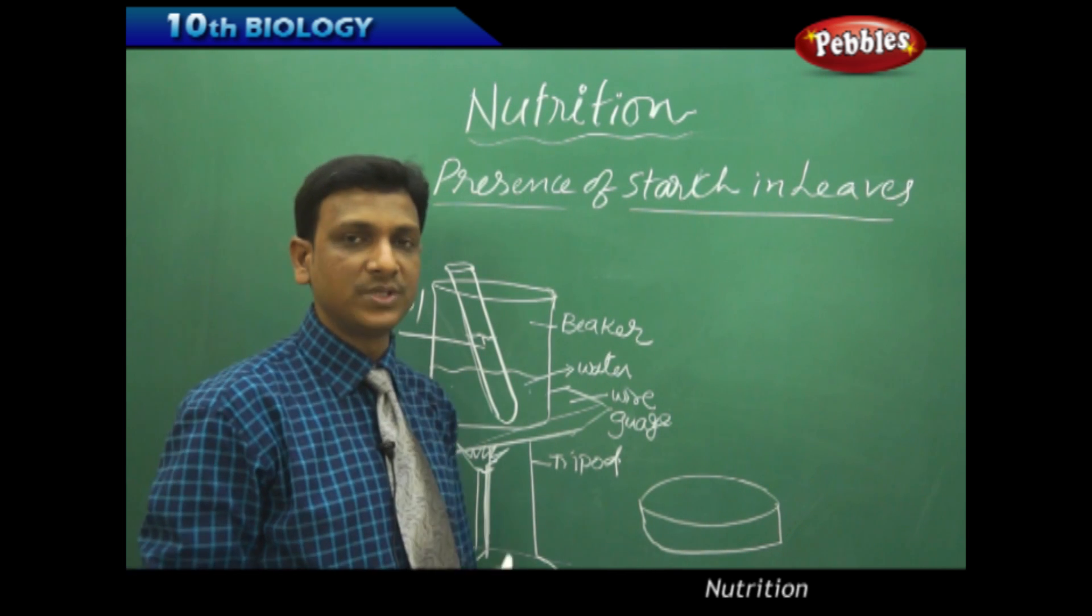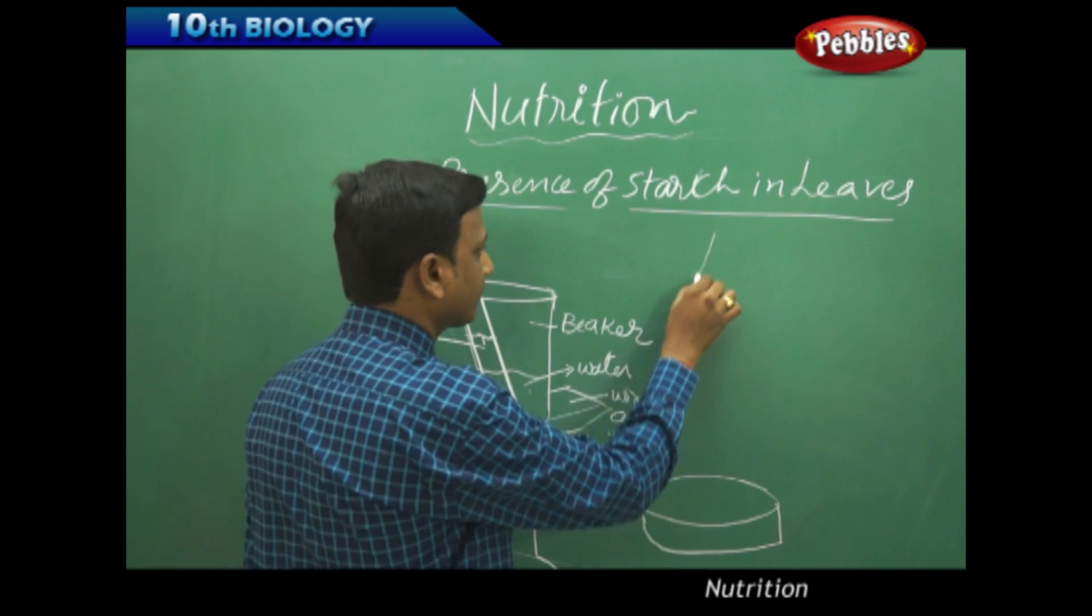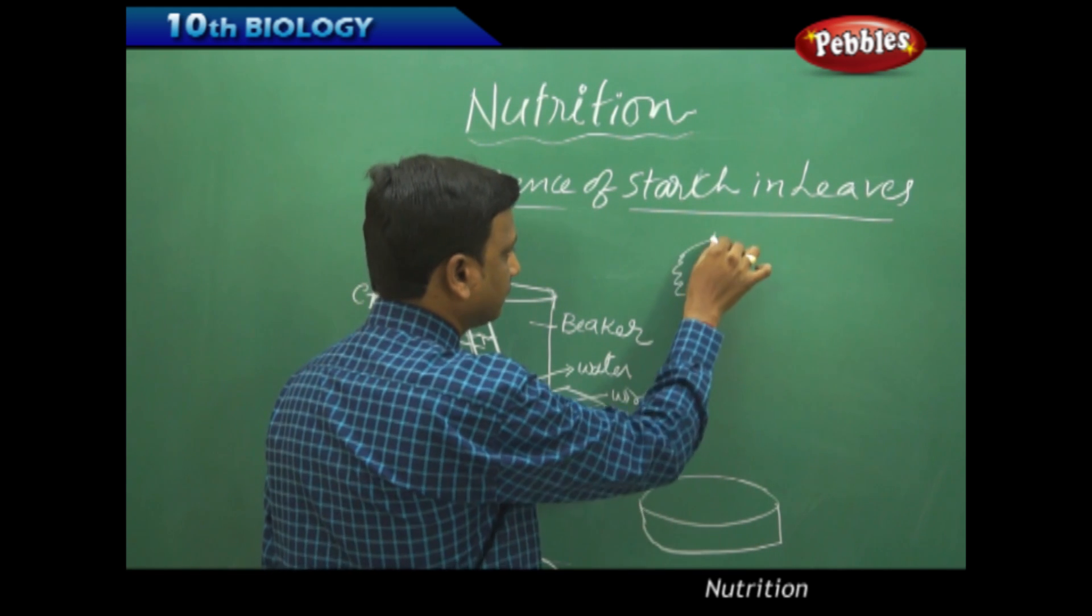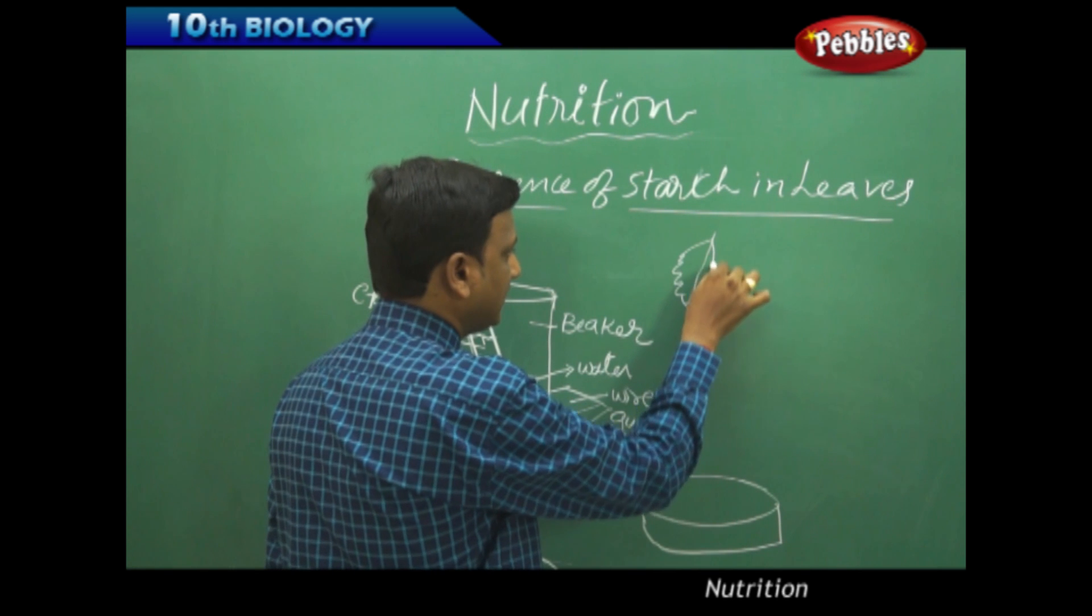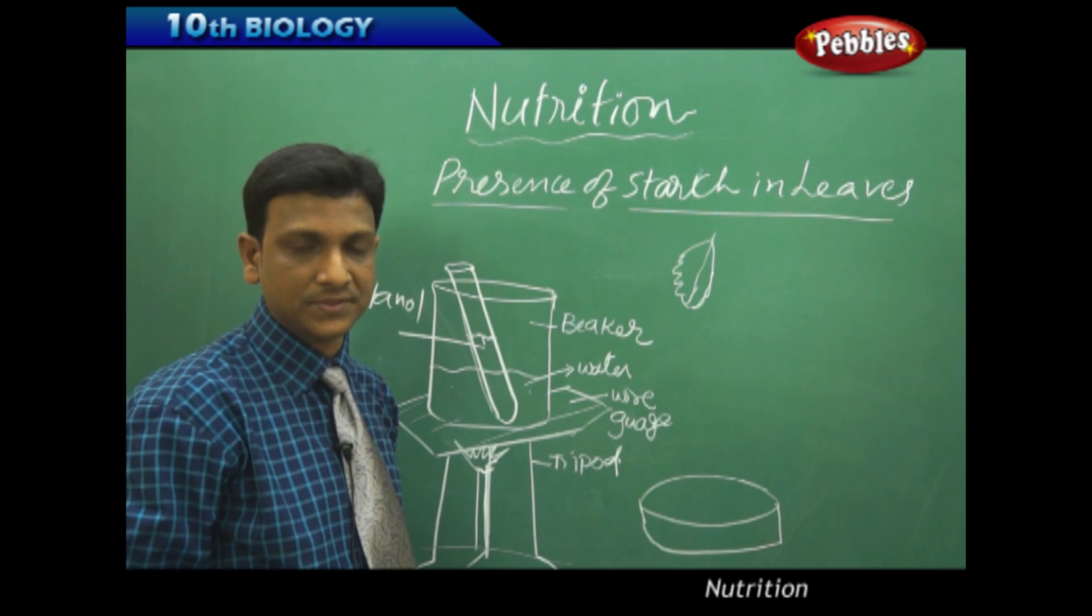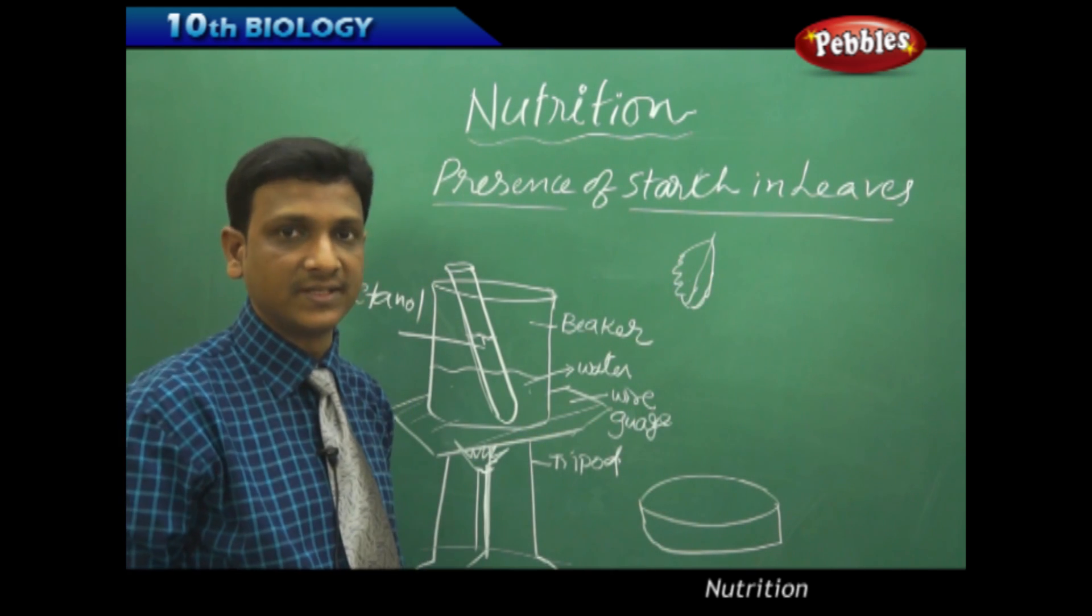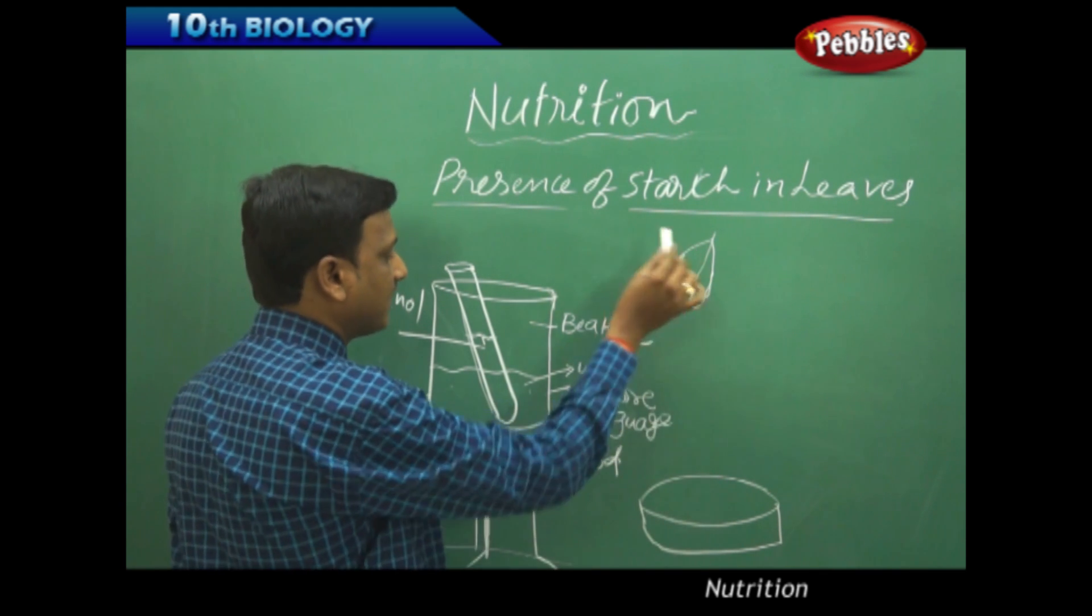Now we need to take a green leaf. This is the leaf which we have taken, a green leaf from a plant, just freshly plucked leaf. We are thinking that it contains starch. We are going to test whether it contains starch or not. So that leaf has to be collected.